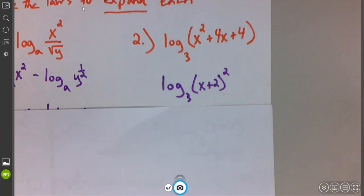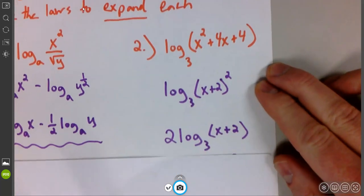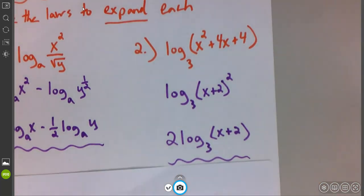Now we can say, well, I see an exponent inside of a logarithm, that 2. So I can multiply that out front, and I'm left with 2 log base 3 of x plus 2. We are expanding these things out, using the rules to pull apart these things as much as possible. Moving on.